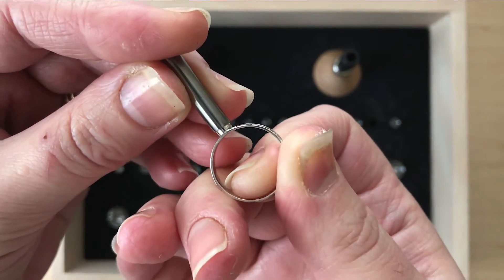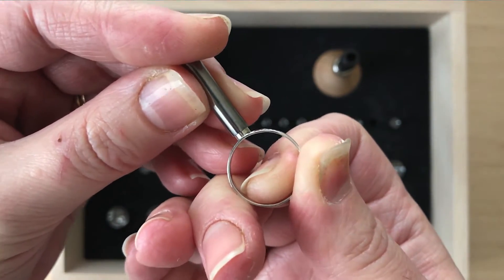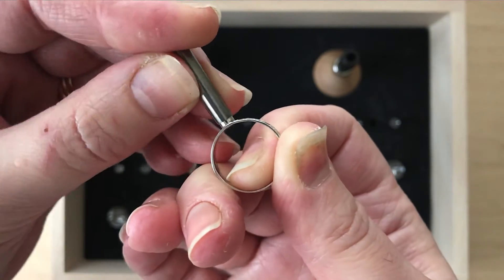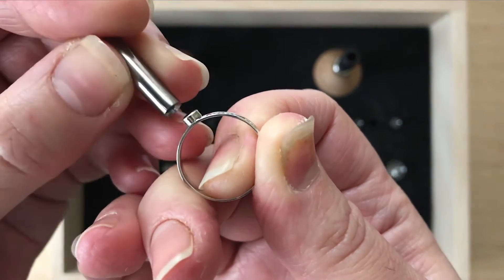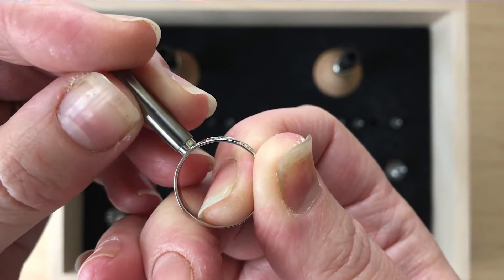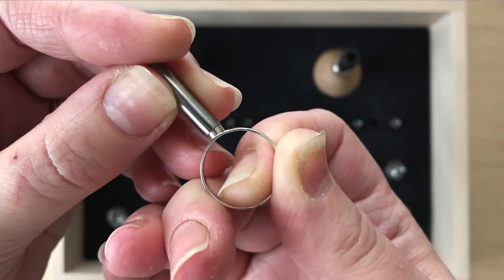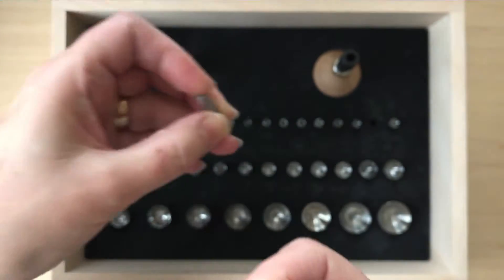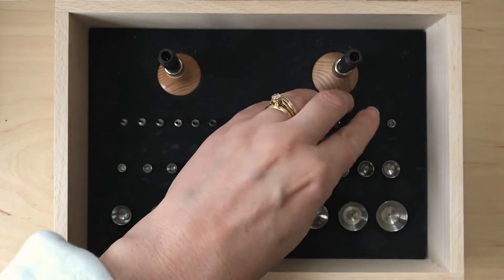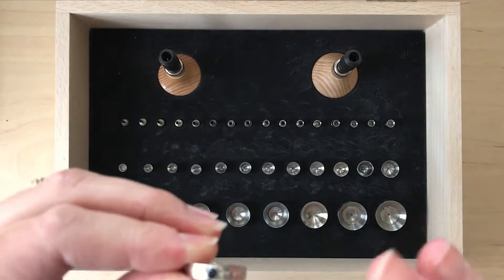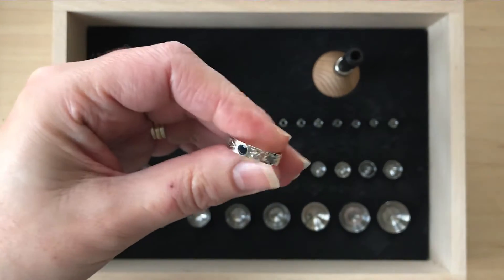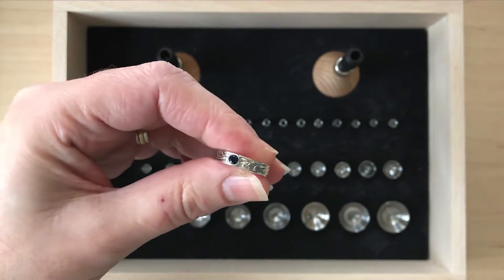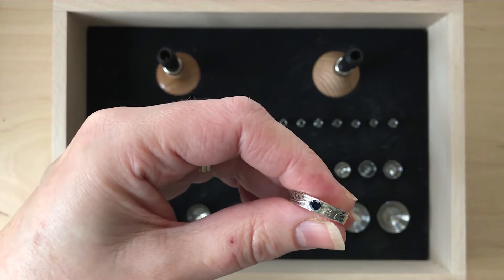Looking at it, this looks like it could be the right size but you won't know that until you give it a go. But what you're looking for is you want to get a punch that's just slightly bigger than your bezel. But you won't know if that's the right size until you actually use it.